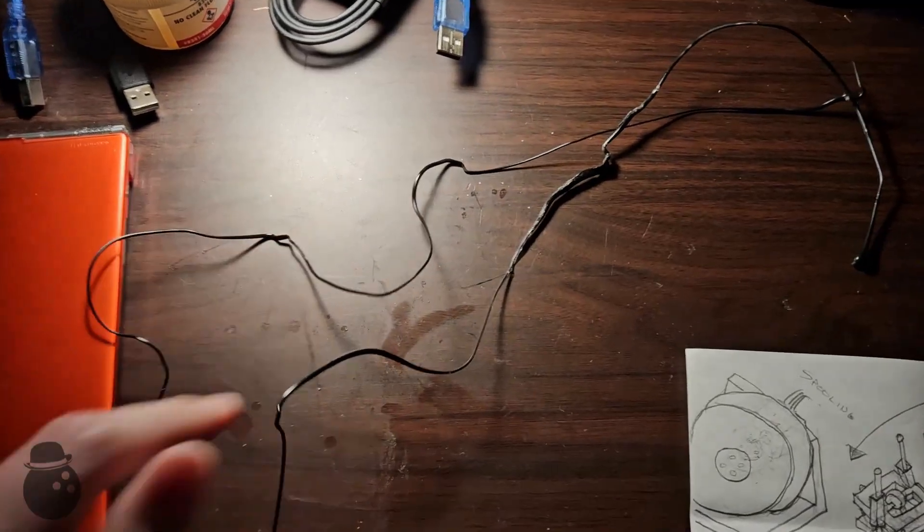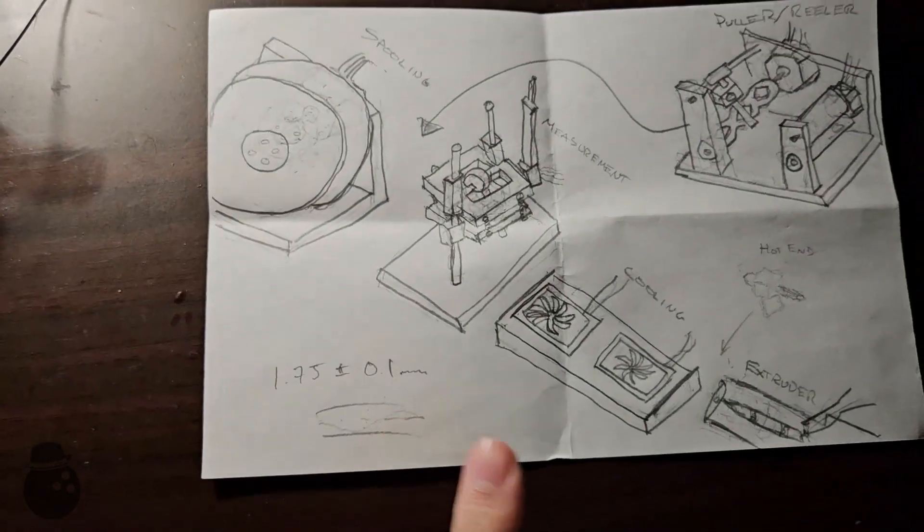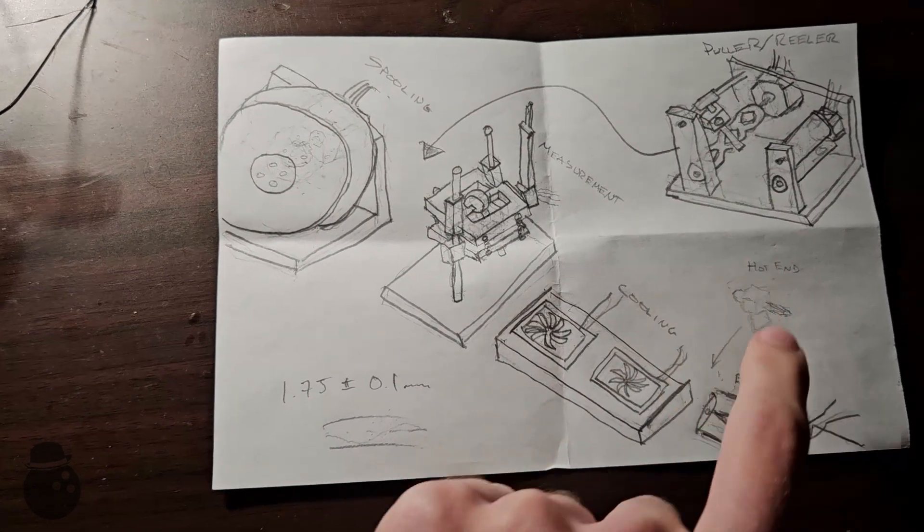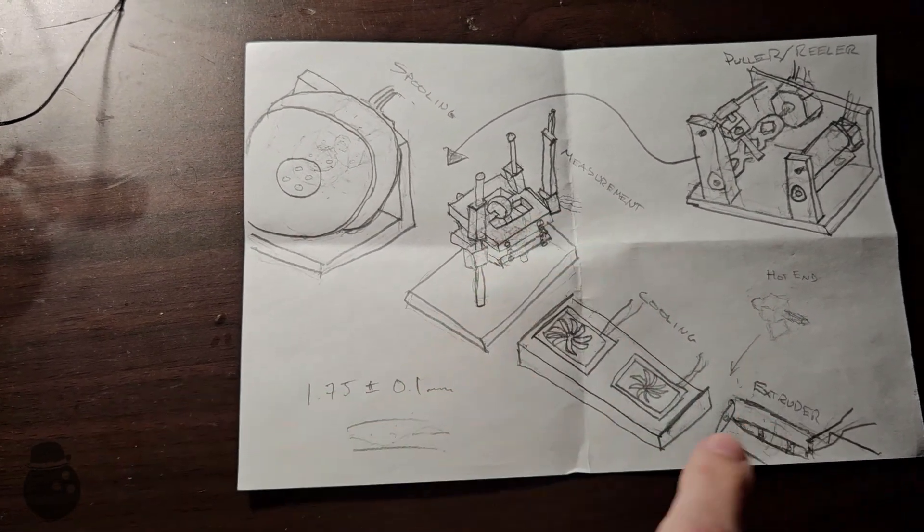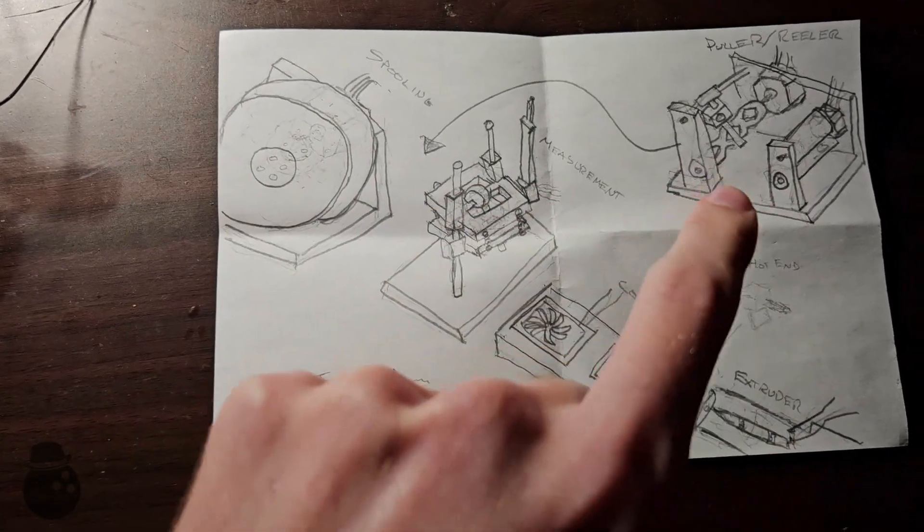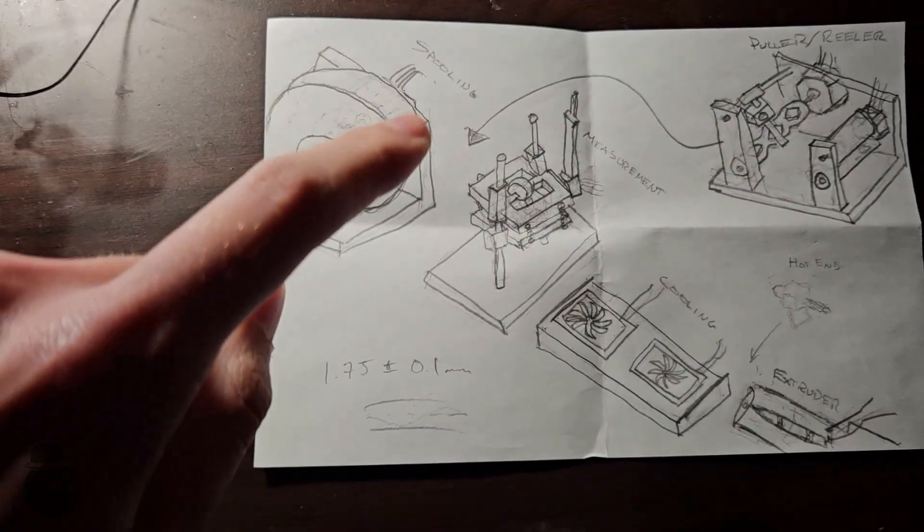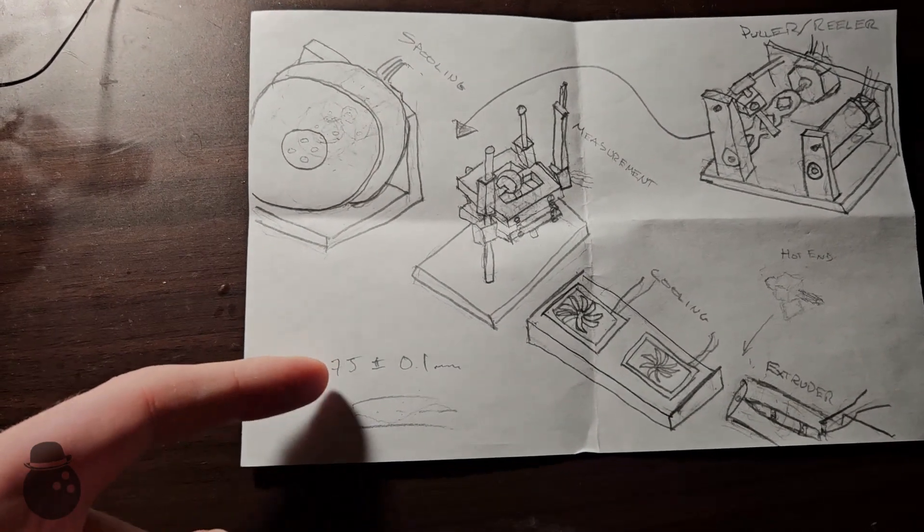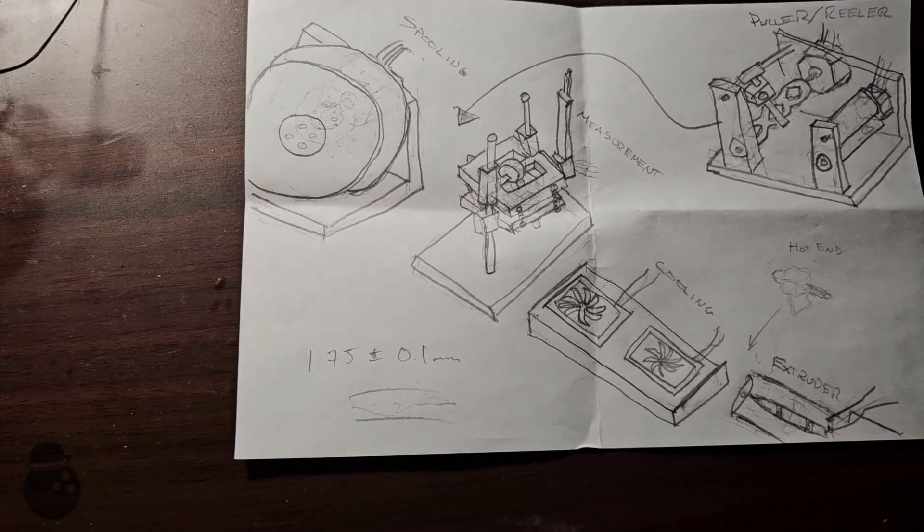How do we turn this unusable string of PLA into actual filament though? Well, we have the extruder done. We may need to reintroduce the secondary hotend, and then we need a cooling system, a measurement system that informs a puller/reeler how fast to spin, to load a spooler. Which all together needs to generate consistent filament of a 1.75mm diameter plus or minus about a tenth of a millimeter. That fun will have to wait for next video.